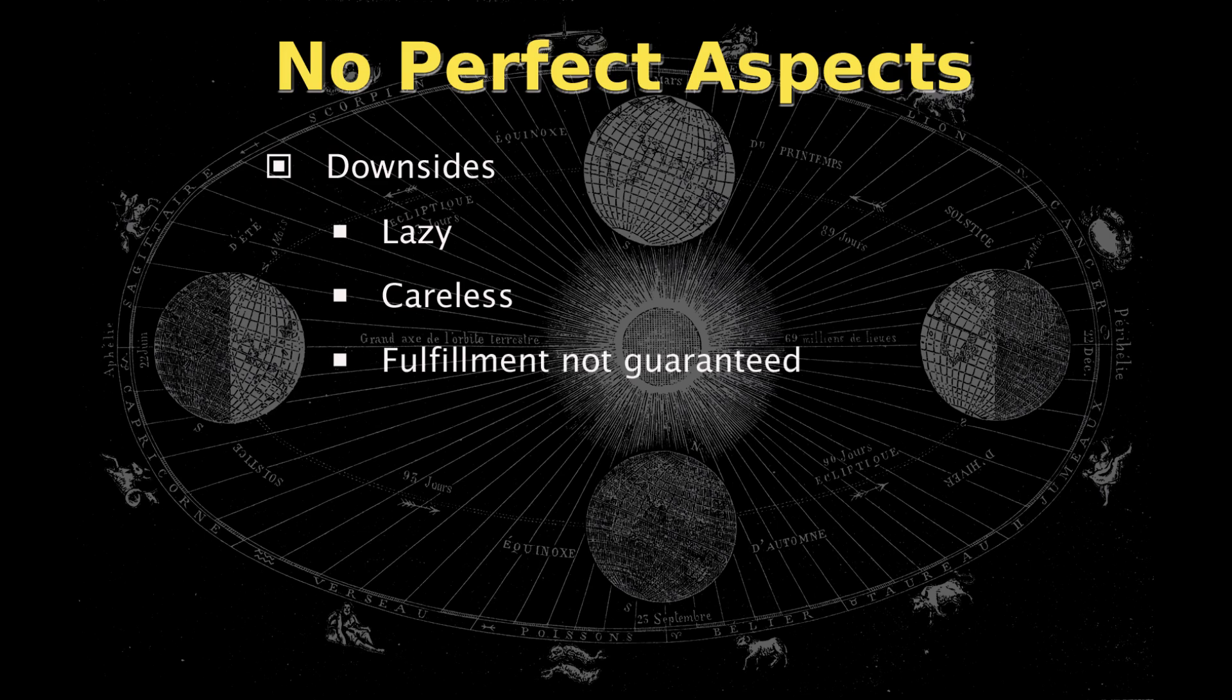Trines don't even guarantee fulfillment. A woman I went through astrology classes with had a trine-dominant chart, and she found success in the world very easily. She said that she could pick up and find a new career that would be fulfilling, and if she did that, it would also continue to be easy. This was actually the problem. She wanted more challenge in her life.